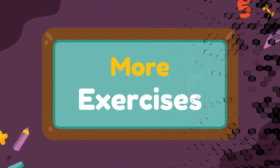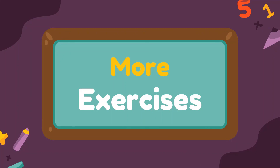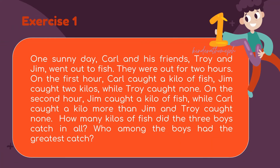Now it is your turn. Exercise 1: One sunny day, Carl and his friends Troy and Jim went out to fish for two hours. On the first hour, Carl caught 1 kilo of fish, Jim caught 2 kilos, and Troy caught none. On the second hour, Jim caught 1 kilo, Carl caught 1 kilo more than Jim, and Troy caught none. How many kilos of fish did the three boys catch in all, and who among them had the greatest catch?